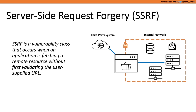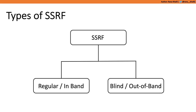Now we're ready to define SSRF: it is a vulnerability class that occurs when an application fetches a remote resource without first validating the user-supplied input. This allows an attacker to coerce the server into making network connections on behalf of the attacker, potentially targeting systems behind firewalls. If you see an application sending an IP address, hostname, or URL in a parameter, it definitely needs to be tested for SSRF.